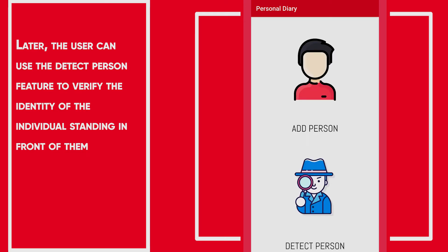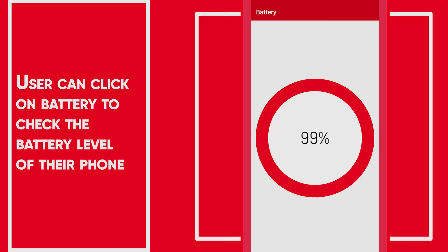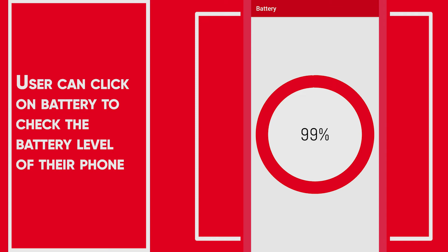Person matched by AUNA by 0.87%. The user can click on Battery to check the battery level of their phone. Battery level is 99% and device is not charging.